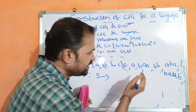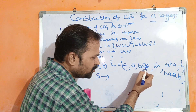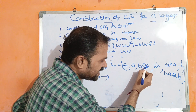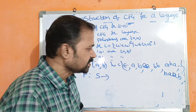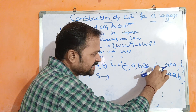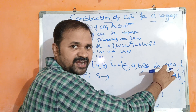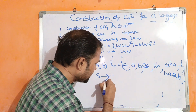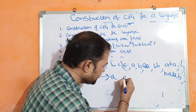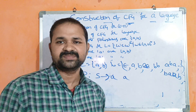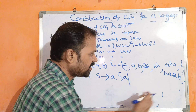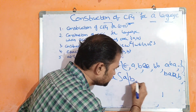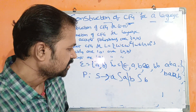Let us write the production rules. S implies ASA — if the string starts with A it ends with A, with any palindrome in between. Or S implies BSB — if it starts with B it ends with B. For an odd-length palindrome like ABA, in between A and A we have B; for BABAB, in between we have B as the middle character.